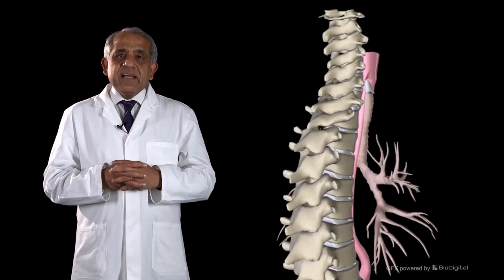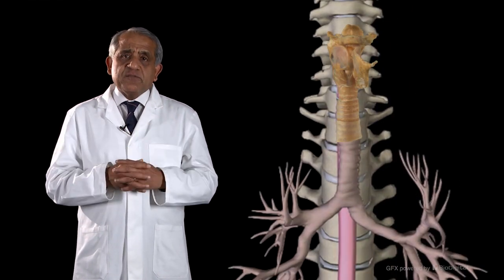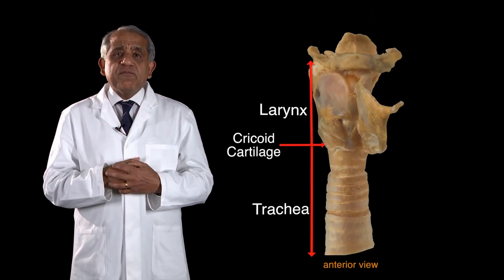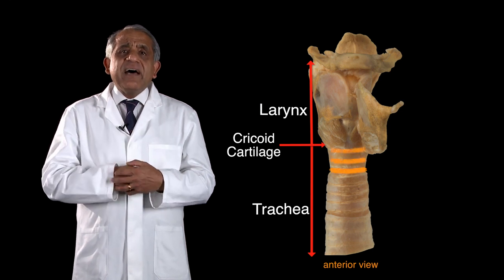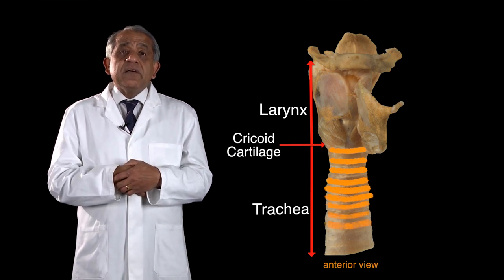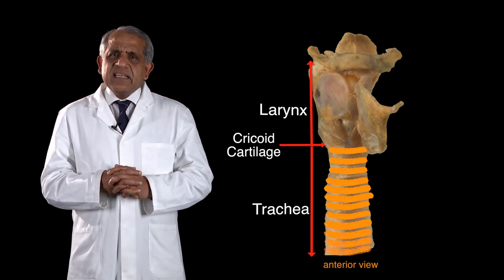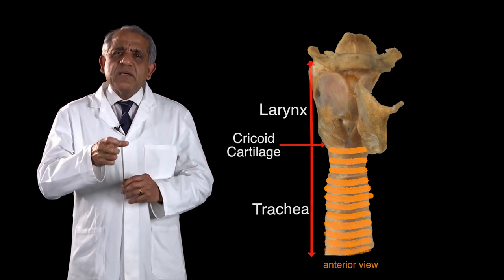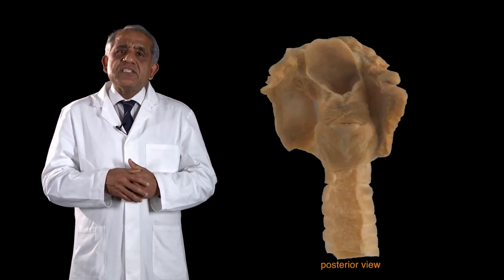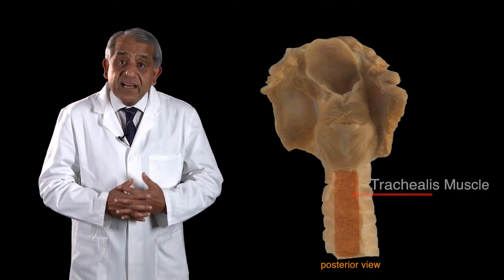The trachea is a palpable, fairly rigid structure. What accounts for its rigidity and palpability is that the wall of the trachea is reinforced by rings of hyaline cartilage — 15 to 20, a variable number of cartilaginous rings. However, these rings are not true rings; they don't encircle the trachea completely. They don't meet in the posterior midline, and that deficiency is bridged by a sheet of fibrous tissue and muscle called the trachealis muscle.